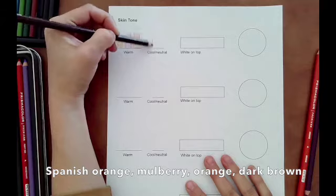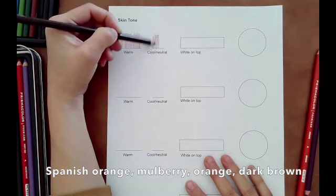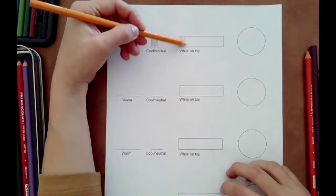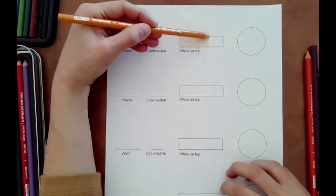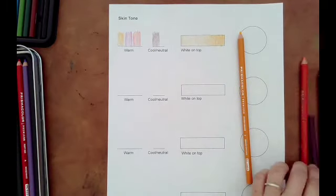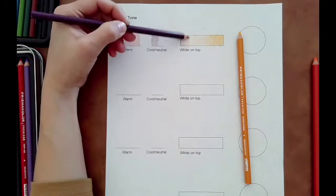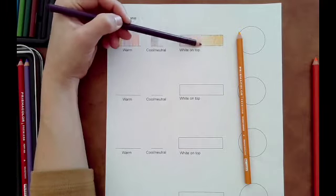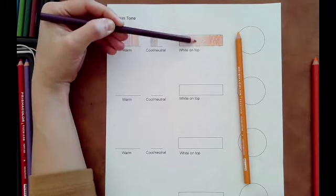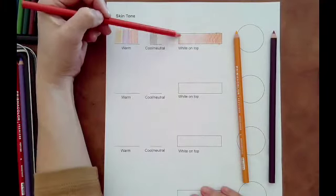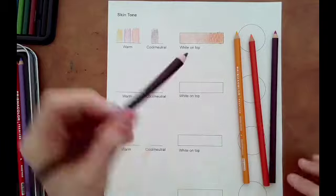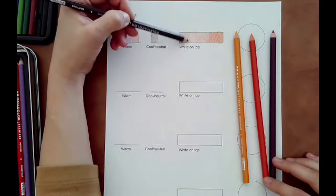If you're using a different type of color pencil, choose colors that are comparable. Next I'm going to make a gradient and I'm going to layer them one by one, starting with my lightest color, Spanish orange, going from very light pressure to heavier pressure as I go to the right side to make a value gradient. Then I'm going to layer each color on top following the same process, light on the left side and getting darker as I go to the right side to build my gradient.